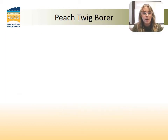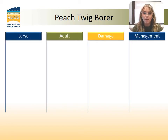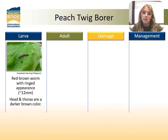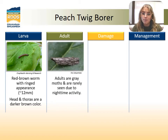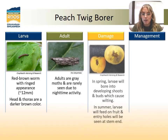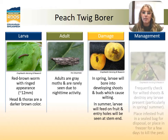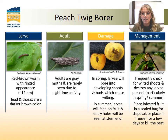A common peach pest is the peach twig borer, with its red to brown worm larvae and standard grey moth adult. The damage from this pest is typically caused by larvae that bore into developing shoots and buds, causing wilting, which is a great way to identify if the pest is present. In the summer, careful inspection should be done on the stem end of the fruit to look for entry holes where larvae enter. To manage this pest, you can destroy any of the wilted shoots and place infested fruit in a sealed bag in the freezer for a few days to kill the pest before disposal, to prevent the spread of this insect.